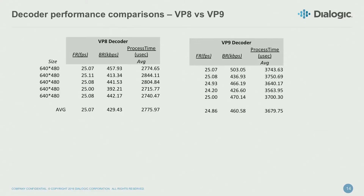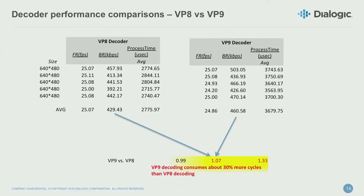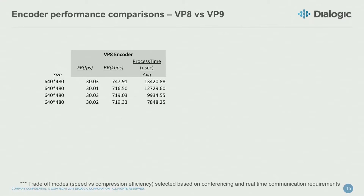That was the VP8 side; this is the VP9 side. Taking the averages and bringing them together, the frame rate is essentially the same. The bit rate is a little bigger for VP8. We can't really control the decoder side, so it is what it is. The processing time to decode is about 30% more for VP9.